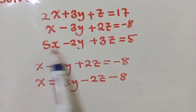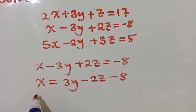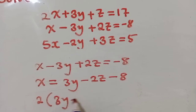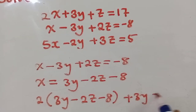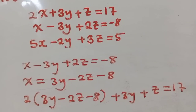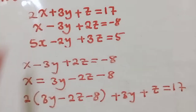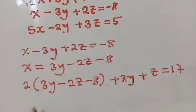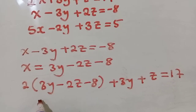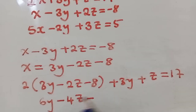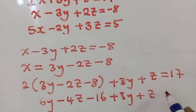We'll start with this equation and then come to the next one. We put the expression where x is, so it will be 2 times open bracket 3y minus 2z minus 8, close bracket, plus 3y plus z, equals 17. We can now distribute: we have 6y minus 4z minus 16 plus 3y plus z equals 17.